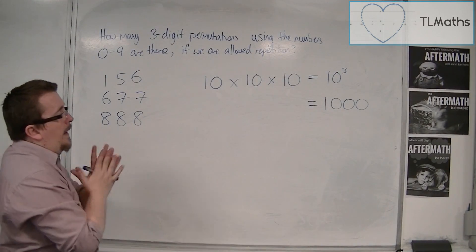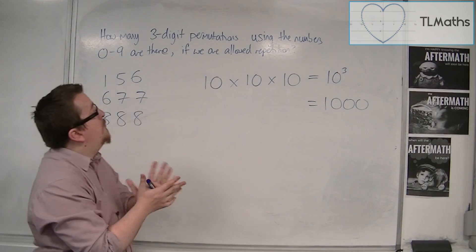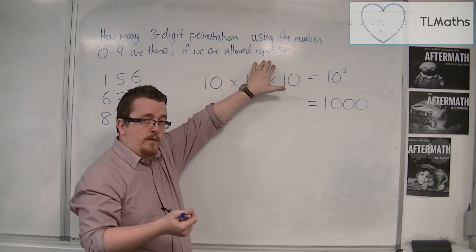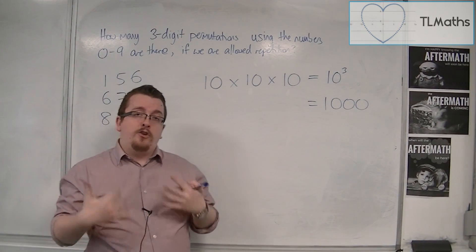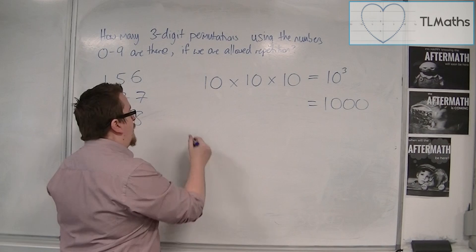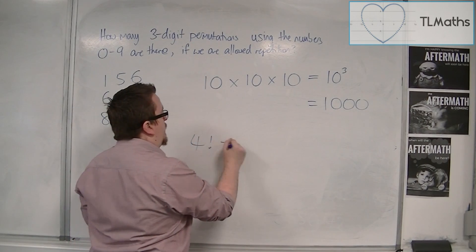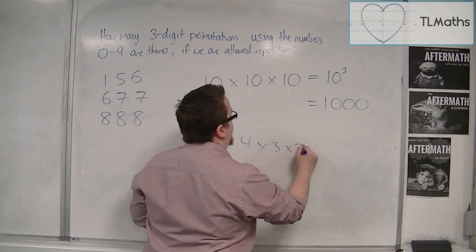Now notice how, because we're allowing repetition, that means we're not going to be using a factorial here. Because the factorial, when we've been looking at it, so 4 factorial is 4 times 3 times 2 times 1.